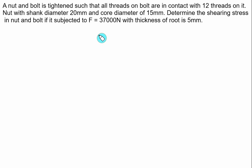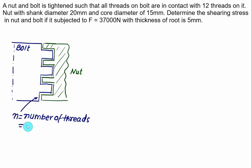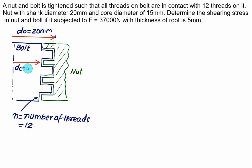The half section of the bolt is shown with a square thread; all 12 threads are engaged, so total number of threads = 12. The nominal diameter D0 = 20 mm and core diameter DC = 15 mm. The force is 37,000 N and the thickness of the root (T = P/2) is 5 mm. The bolt will fail by shear and the development of shear area for the bolt is: circumference = pi × DC × N × thickness T.